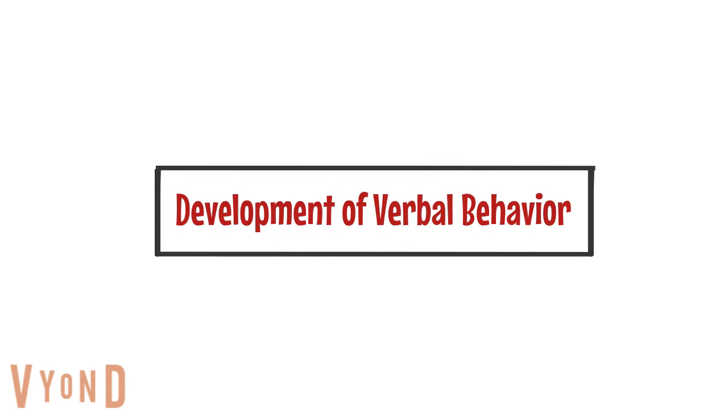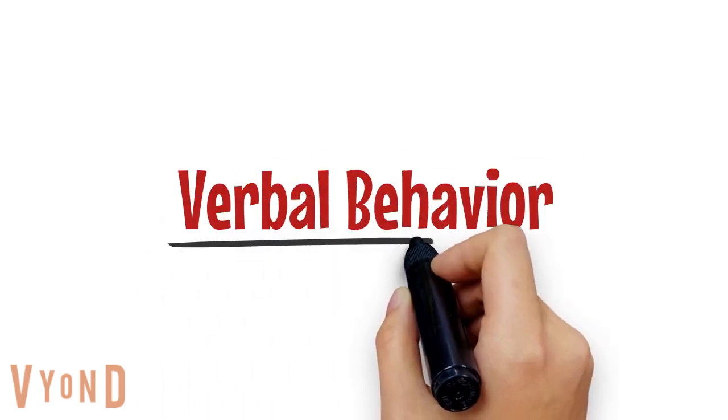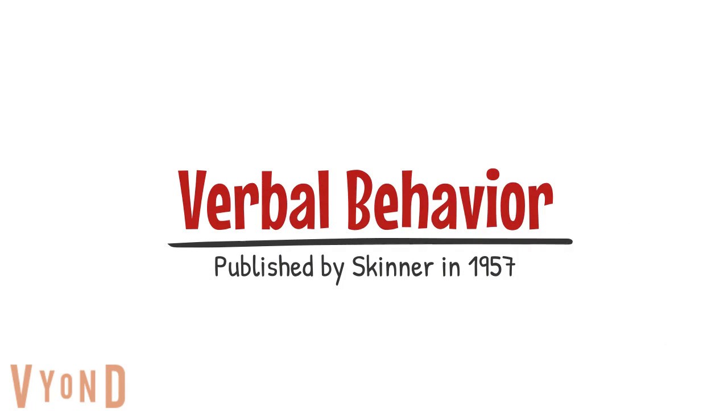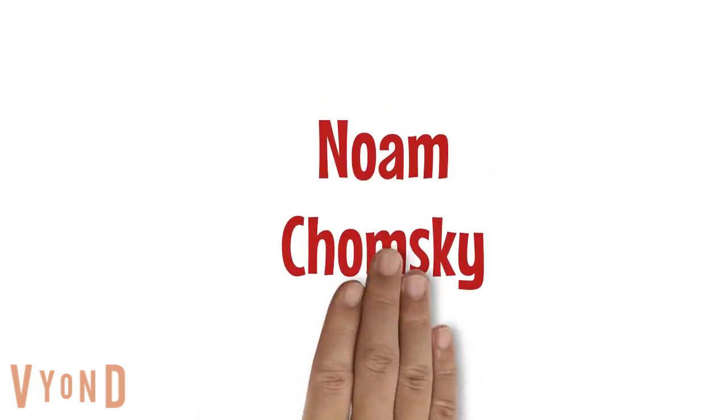Now we'll talk about the development of verbal behavior. In 1957, Skinner published the book Verbal Behavior, and he believed it would prove to be his most important work. A linguist named Noam Chomsky, who published his own account of language that same year, was a very outspoken critic of Skinner's work. Skinner never responded to Chomsky's review — he felt it was condescending and that Chomsky had clearly misunderstood his behaviorism and his view on verbal behavior.